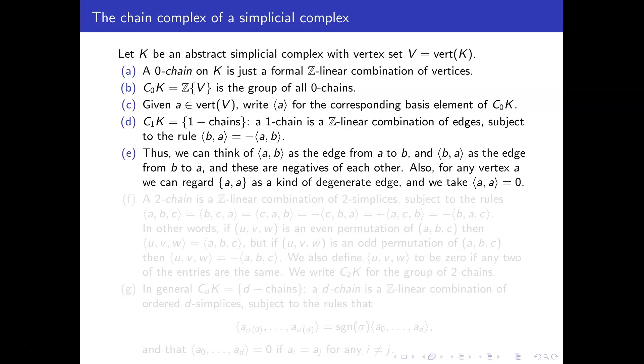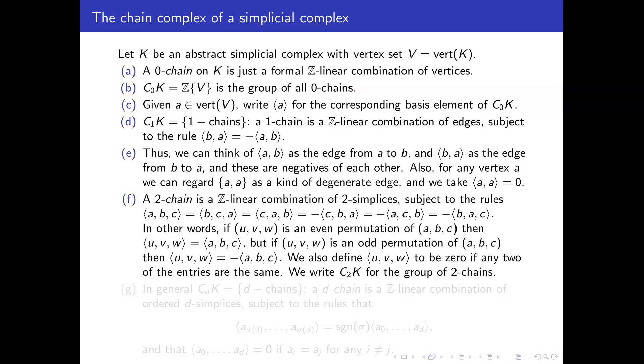And then there's a kind of a special case of that as well. If we've got just a vertex a, then you can kind of think of ⟨a,a⟩ as being a sort of degenerate edge that just goes from a to itself. And in the group C_1(K), that degenerate edge counts as zero. So that, of course, that's consistent with the rule that if we flip it around, then it has to be equal to minus itself, right? So ⟨a,a⟩ has to be the same as minus ⟨a,a⟩. So that forces us, more or less forces us to take pointy ⟨a,a⟩ to be zero.